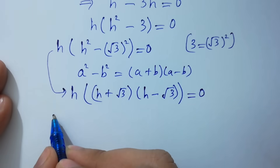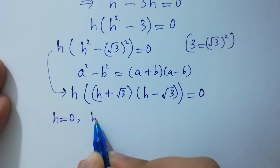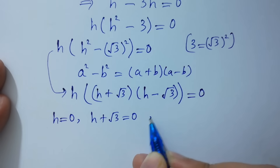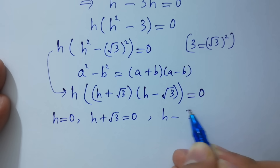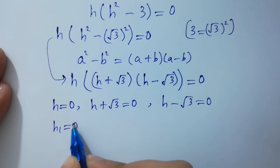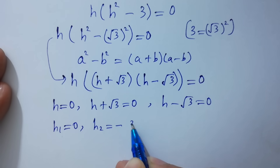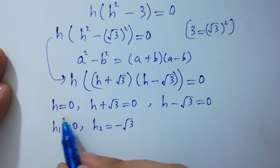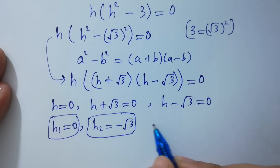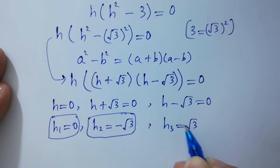Therefore h equals 0, or h plus square root of 3 equals 0, or h minus square root of 3 equals 0. So h₁ equals 0, h₂ equals minus square root of 3, and h₃ equals plus square root of 3.